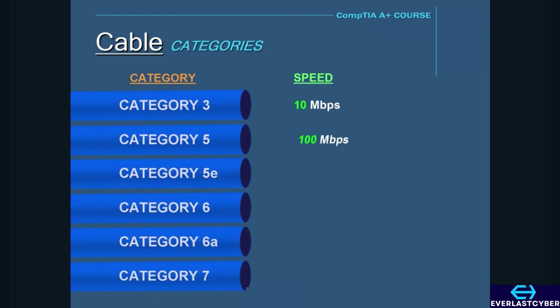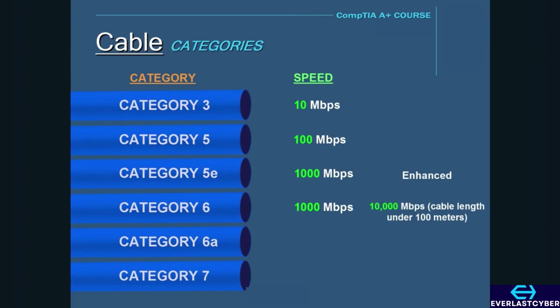Category 5 has a maximum speed of 100 megabits per second. Category 5e is an enhanced version of Category 5 with speeds of 1000 megabits per second. Category 6 also has a maximum speed of 1000 megabits per second, but it is more of a heavy-duty cable compared to Category 5e, and it also supports a maximum speed of 10,000 megabits per second.